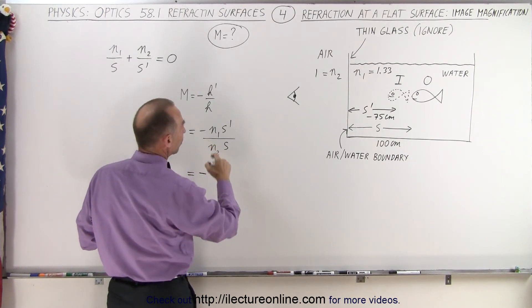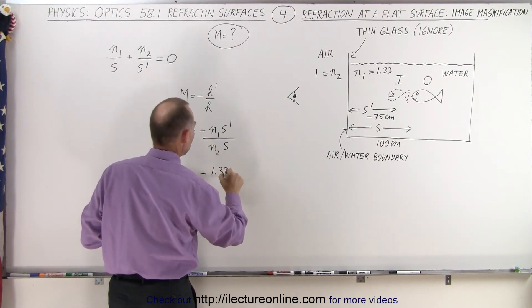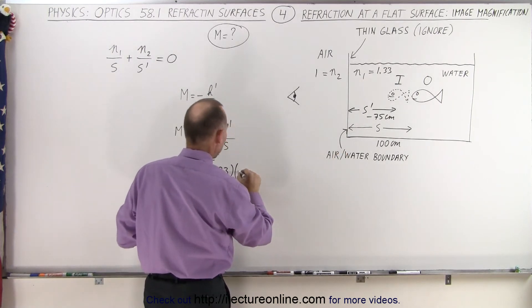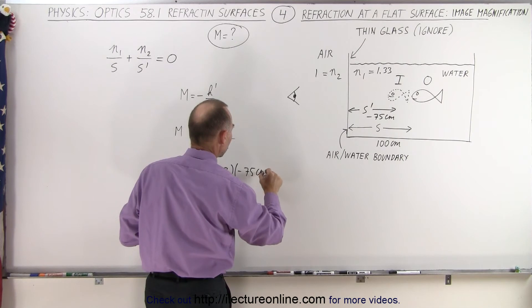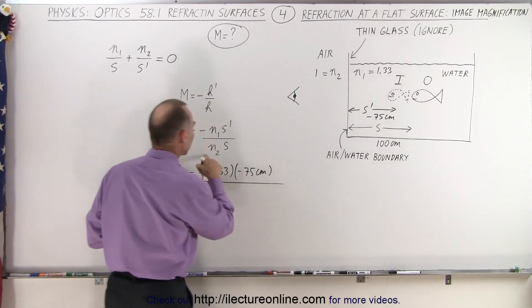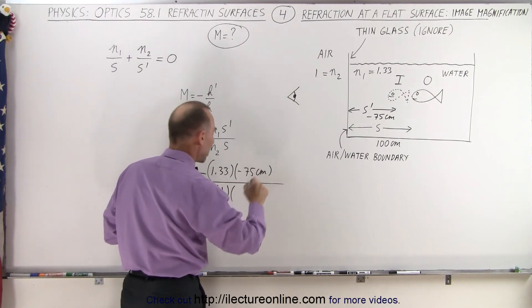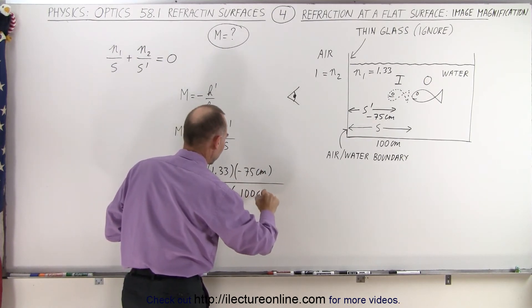So that becomes minus N1, which is 1.33, times the distance to the image, which is a minus 75 centimeters. And we divide that by the index of refraction on the side where the observer is, which is 1, times the distance to the object, which is 100 centimeters.